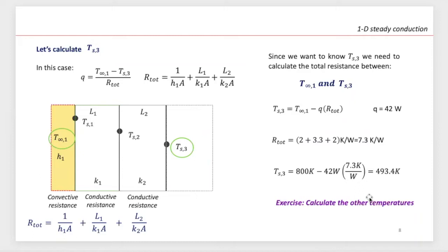Once you select a material, cost is implied, so cost analysis and selection of materials is very important — especially knowing the interface temperatures. So what if we want to calculate TS3? TS3 is the temperature at the second wall — surface three.